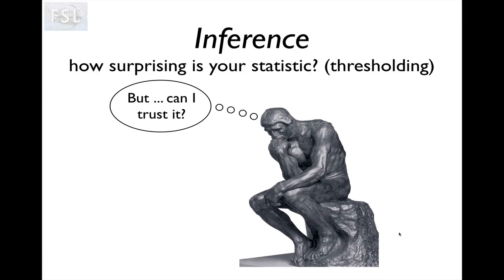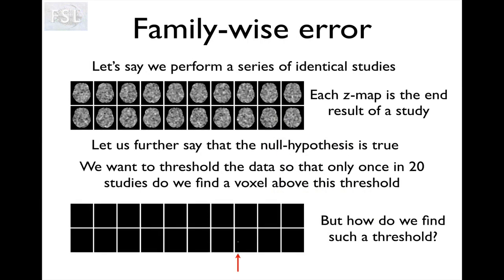Hello again and welcome back to the second part of the inference talk in the FSL course. What we're going to talk about in this episode is the different ways of quantifying surprise in imaging. But first I just want to do a tiny little recap of the very last slide from the previous episode: family-wise error.